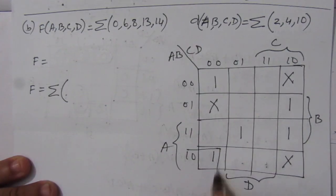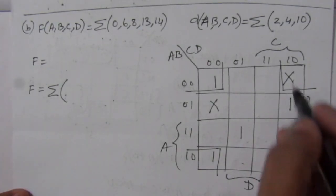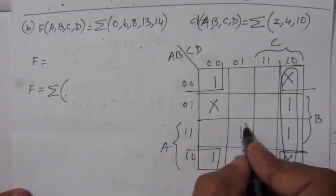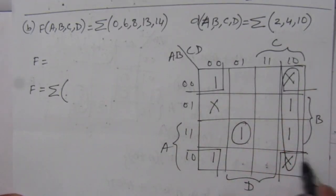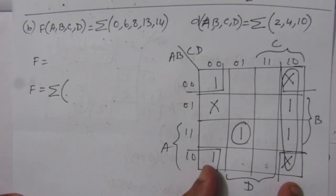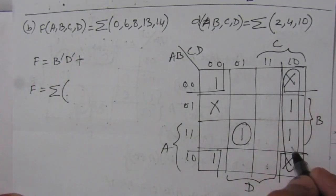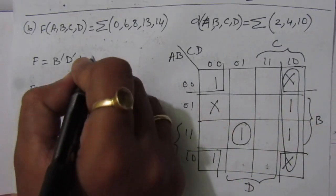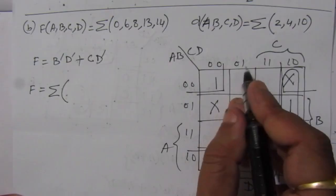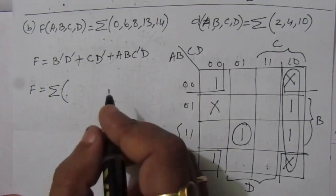How can we combine it? First, let us combine all the corner values. This will be one term, and the second term will be this one. This one cannot be combined with any other value, so we have to consider it as it is. For all the corner values, we get b̄ from one side and d̄ from the two columns, giving b̄d̄. Then from the second combination we get cd̄. The last term gives abc̄d. So the simplified Boolean expression is b̄d̄ + cd̄ + abc̄d.